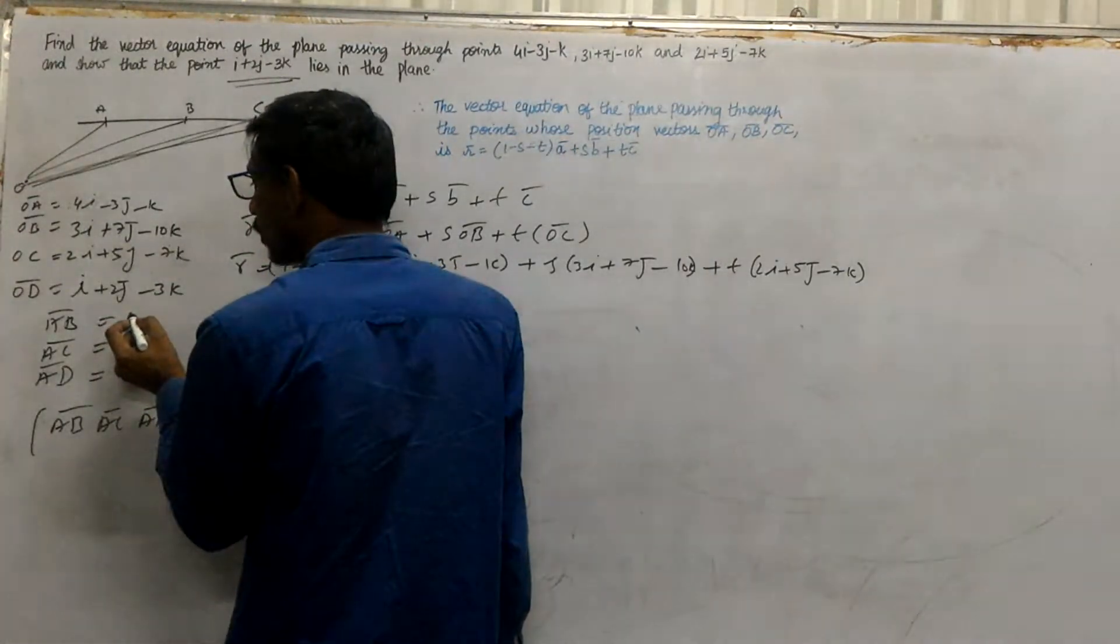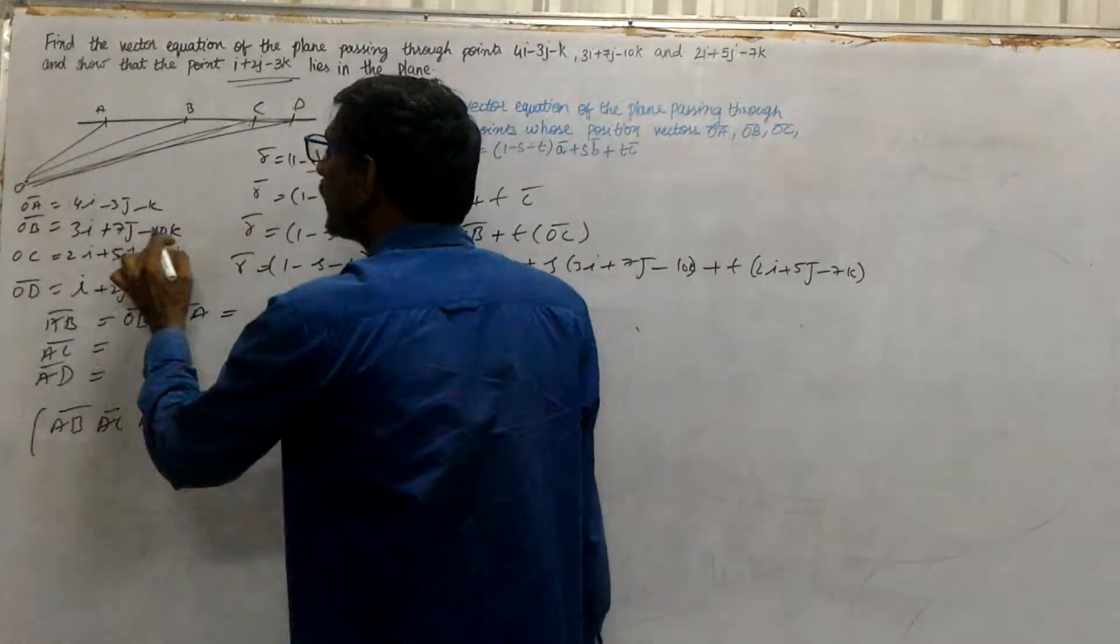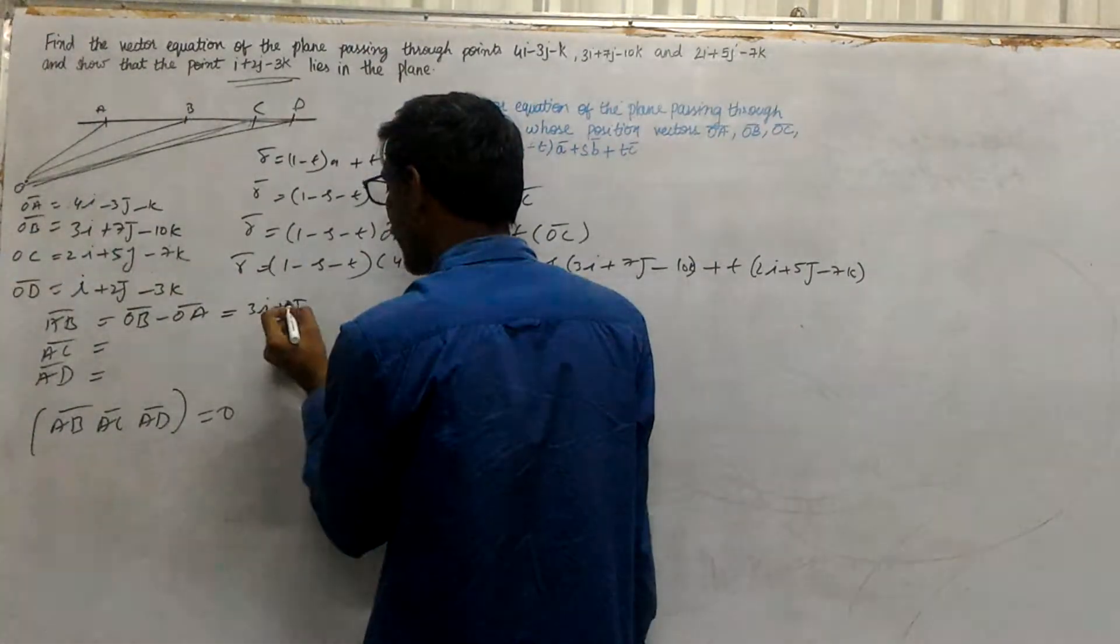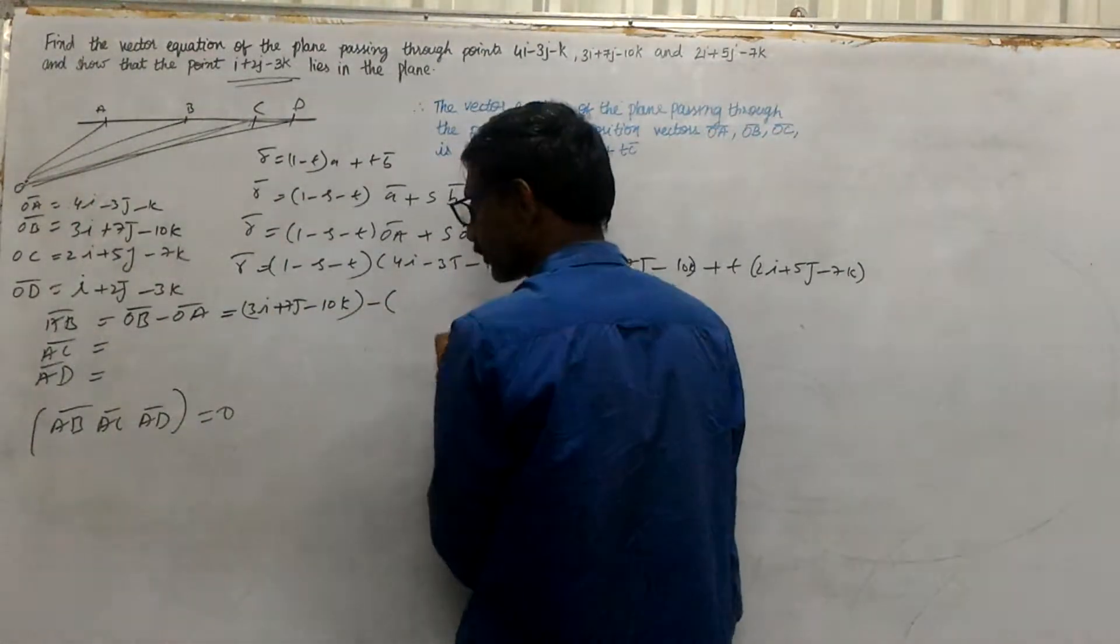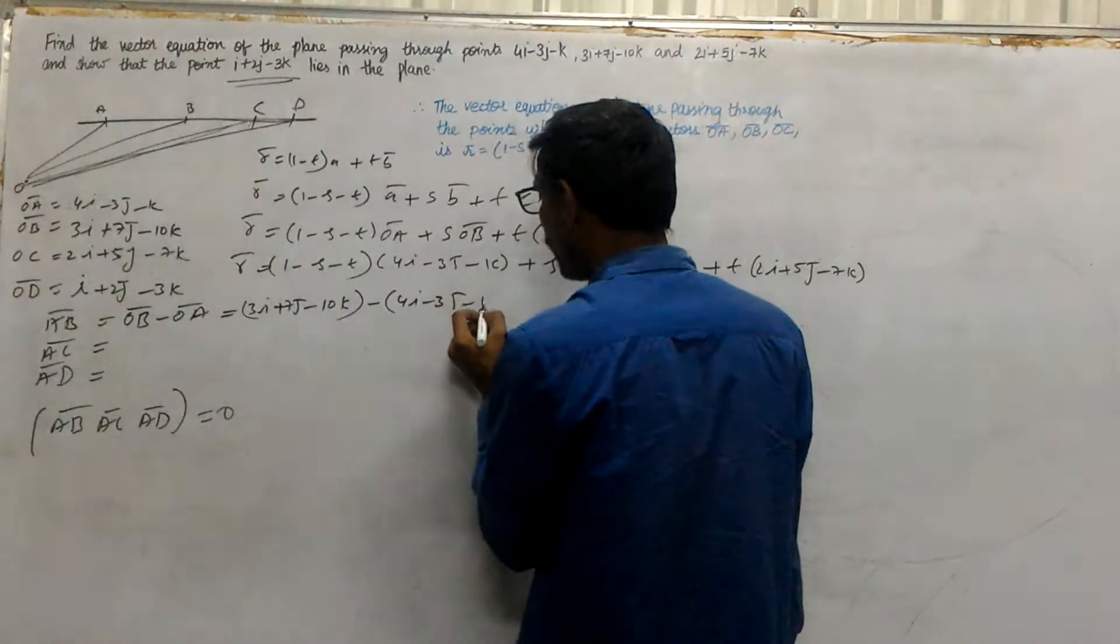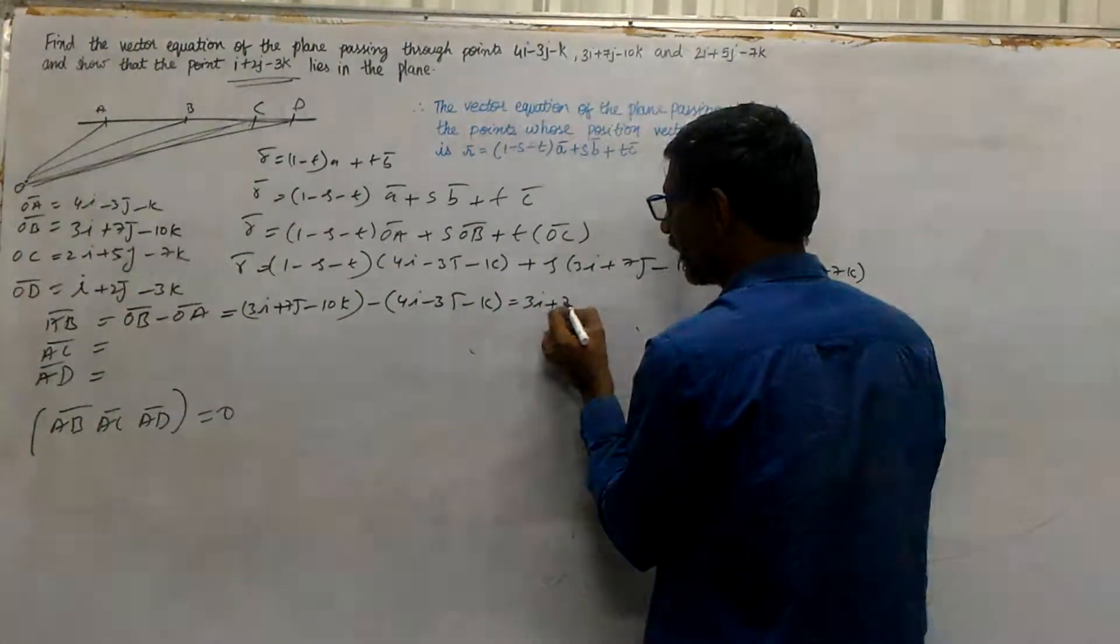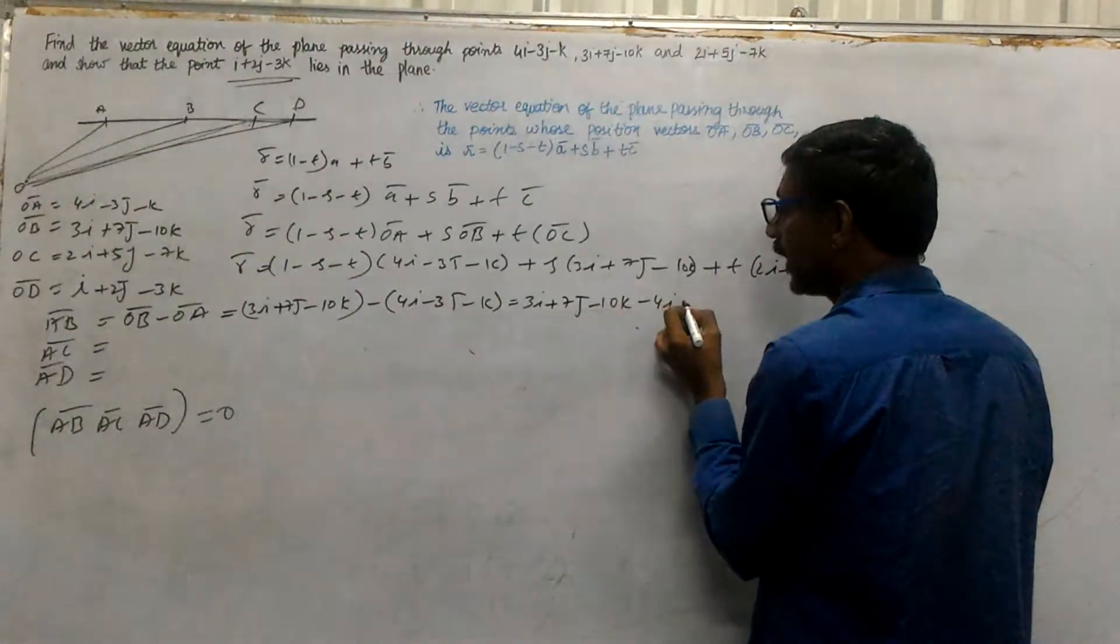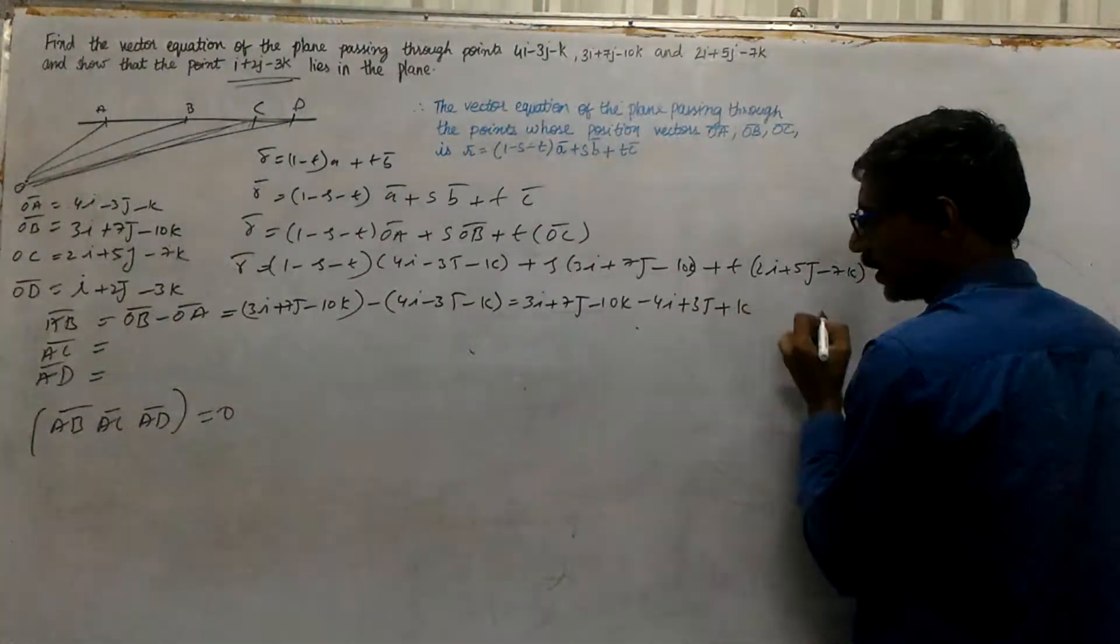AB equals OB minus OA. So OB is 3i+7j-10k minus (4i-3j-k) equals 3i+7j-10k minus 4i plus 3j plus k, which simplifies to -i+10j-9k.